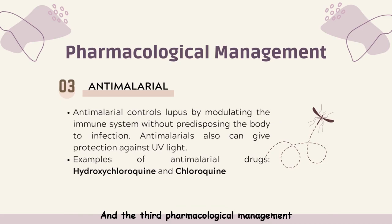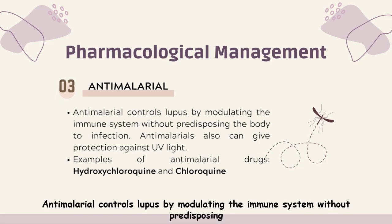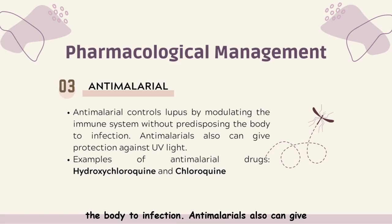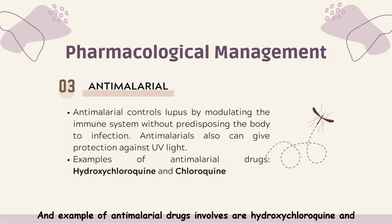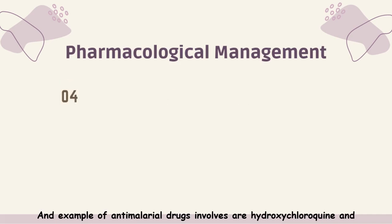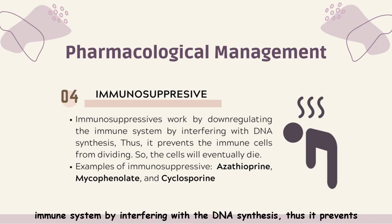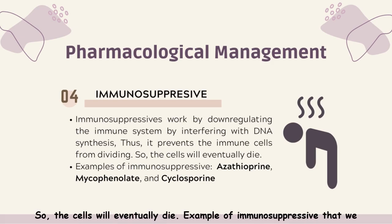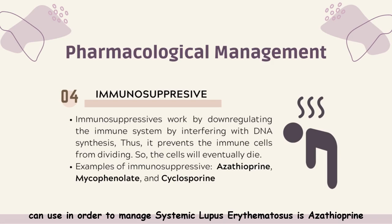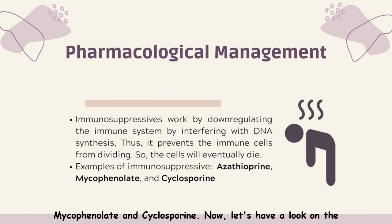The third pharmacological management for SLE is antimalarials. Antimalarials control lupus by modulating the immune system without predisposing the body to infection, and also provide protection against UV light. Examples include hydroxychloroquine and chloroquine. The last pharmacological management is immunosuppressives, which work by down-regulating the immune system by interfering with DNA synthesis, preventing immune cells from dividing so they eventually die. Examples include azathioprine, mycophenolate, and cyclosporine.